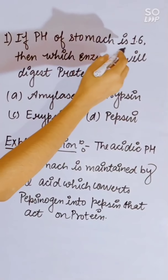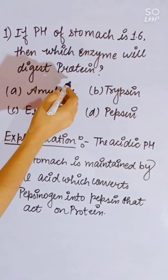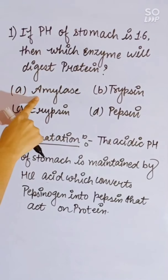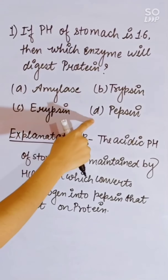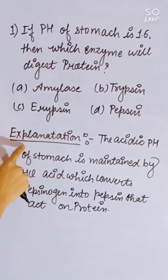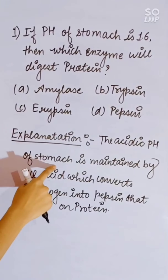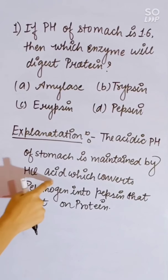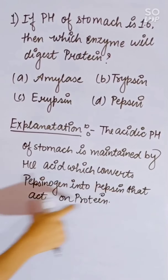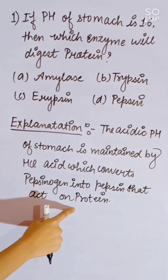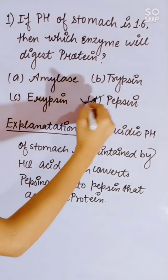If the pH of the stomach is 1.6, which enzyme will digest protein? Options: amylase, trypsin, rennin, or pepsin. The acidic pH of the stomach is maintained by HCl, which converts pepsinogen into pepsin that acts on protein. Correct answer is pepsin.